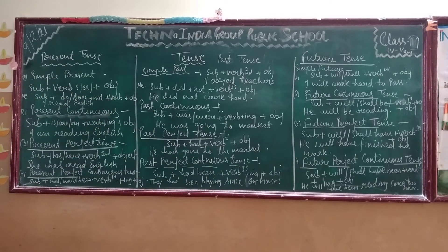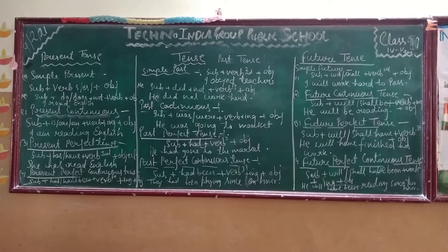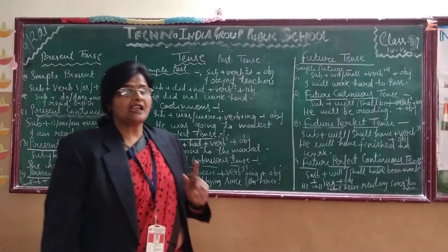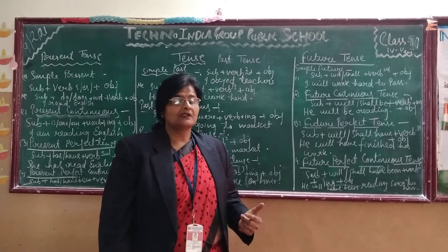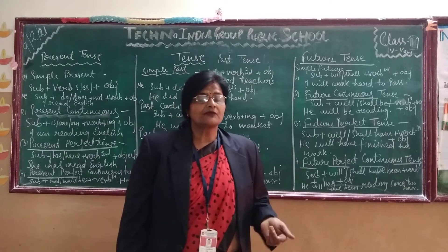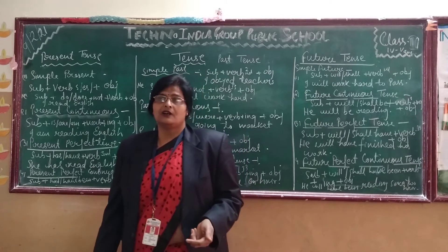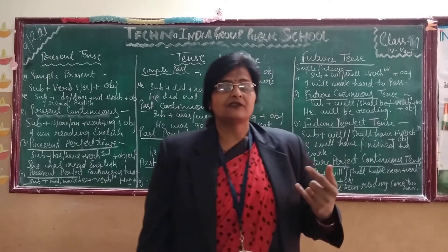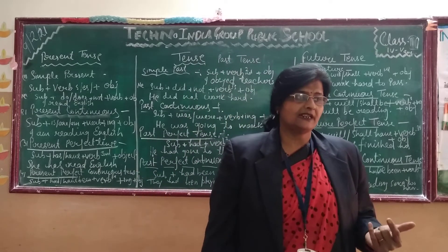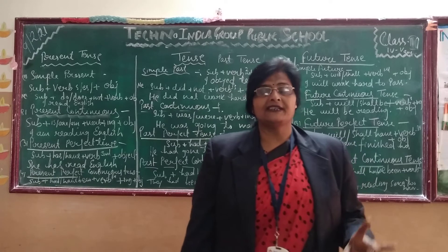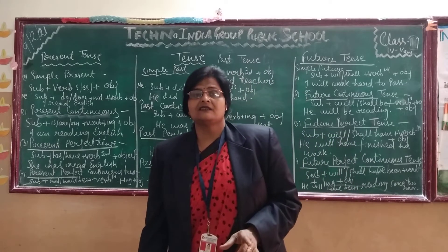I have given you the structure of all the tenses. Now first is simple present tense. In simple present tense, the structure is subject plus verb. With the verb we have to use S or ES, plus object. To frame any sentence, we need three things: subject, verb, and object.